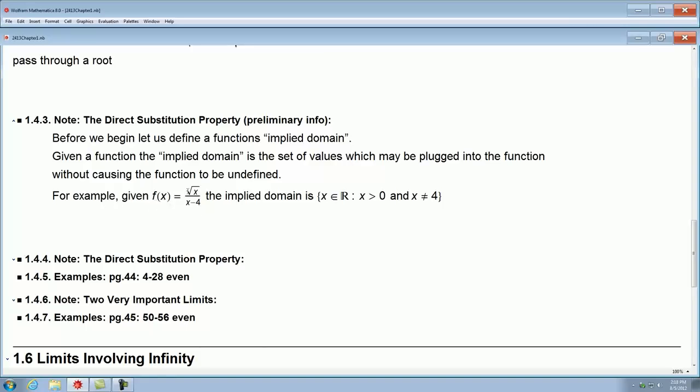For example, if I give you the function f of x equals root x over x minus 4, the implied domain is the set of all x's in the real numbers such that the following two conditions are met. First of all, x has to be greater than or equal to zero. Because you cannot take the square root of a negative number. Therefore, your x values have to be greater than or equal to zero for you to even be able to plug it in. So that's the first part. And you need that x can't be four. Because if you plug four into x for the denominator, you get four minus four, which is zero, division by zero is undefined. So our domain is any x bigger than or equal to zero, but also not four. So that's the implied domain.